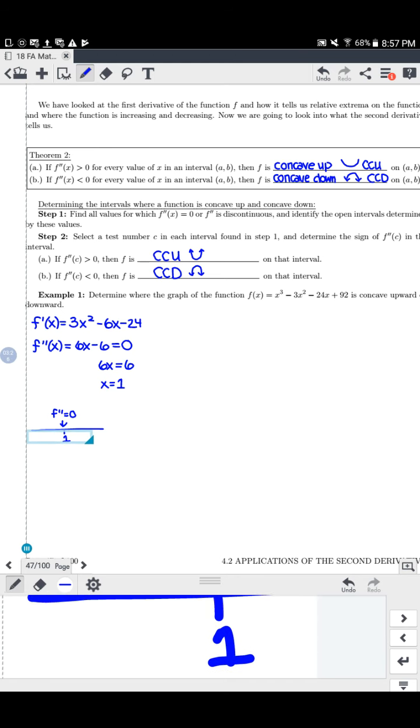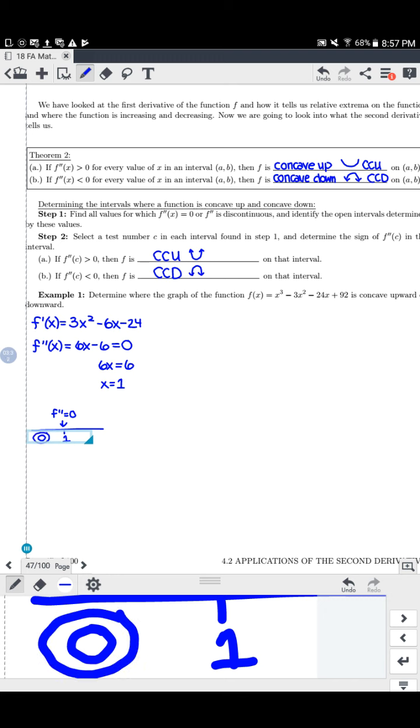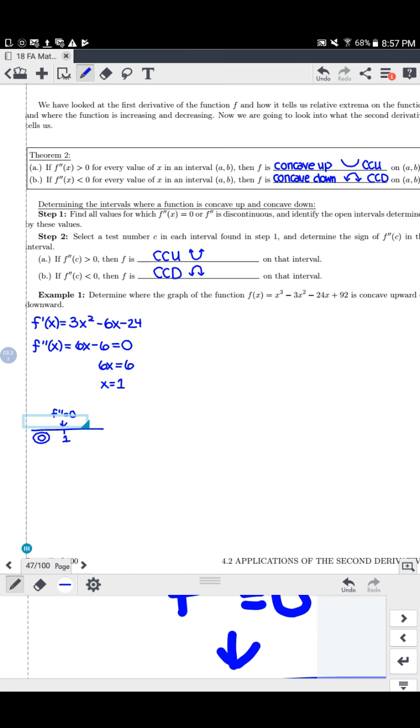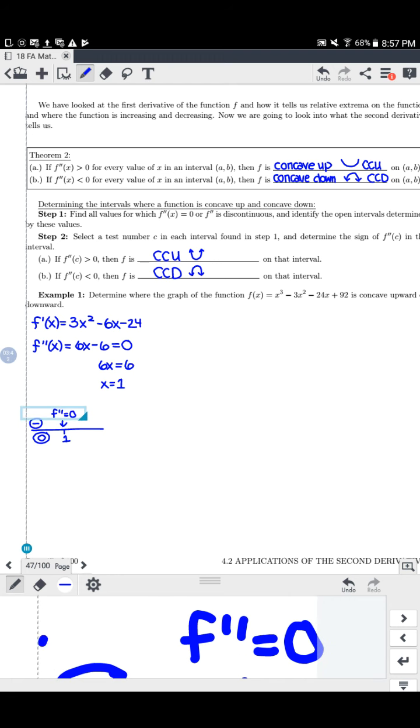And then I'm going to use random test values, so left and to the right. So maybe to the left of 1 I could just plug in 0. And I would plug in 6 times 0 minus 6. We're always plugging into the second derivative for concavity. And 6 times 0 is 0 minus 6 is a negative 6. We get a negative answer. We must be concave down on that interval.